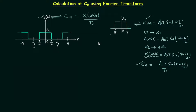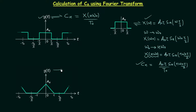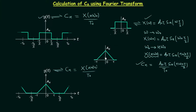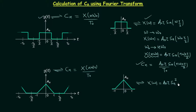Now, what if the periodic signal has a triangular pulse train? For a waveform of this type, we calculate Cn using the Fourier transform. We know Cn equals X(nω0) divided by T0. We can calculate T0 from the waveform, and to calculate X(nω0) we choose the central triangular pulse. The Fourier transform of the triangular function is equal to A0·τ²·sinc²(ωτ/2).